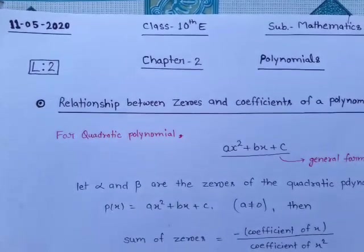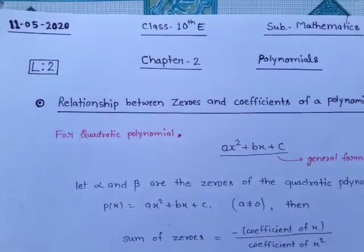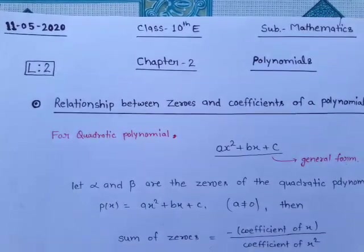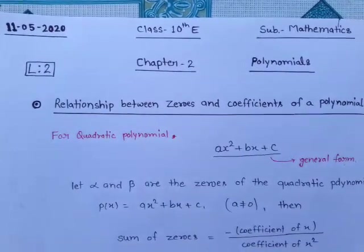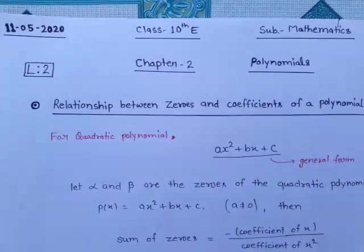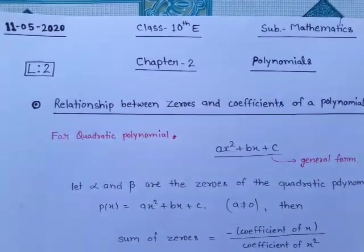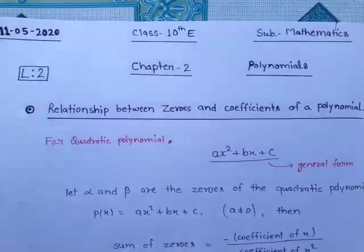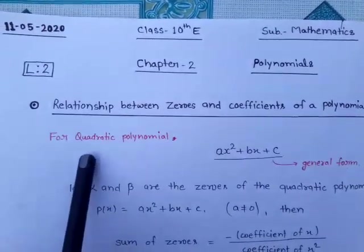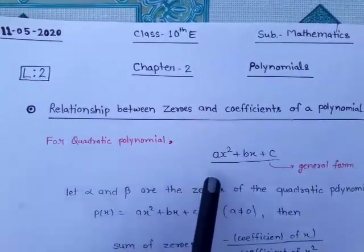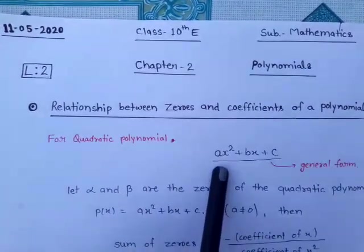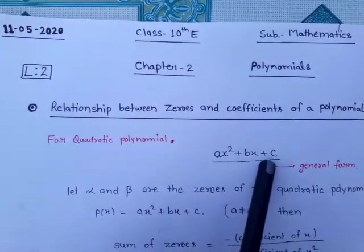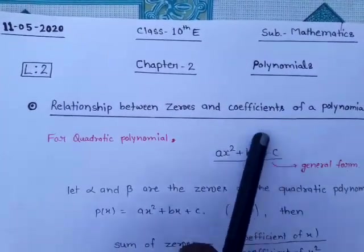Here we continue to the next topic of polynomials: the relationship between zeros and coefficients of a polynomial. First we discuss the quadratic polynomial. The general form of a quadratic polynomial is ax² + bx + c, where a ≠ 0.